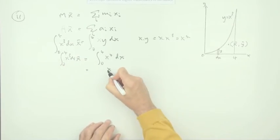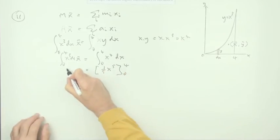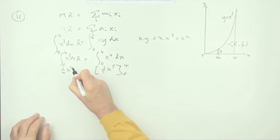So what's that then? That's x to the 5, divide by 5 and evaluate it from 0 to 4. That's x to the 4 and divide by 4 and evaluate it again from 0 to 4.